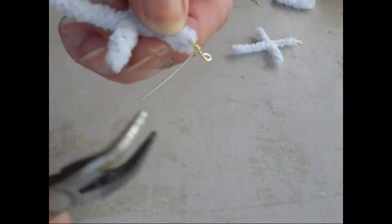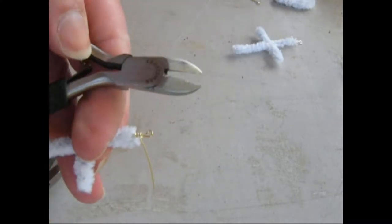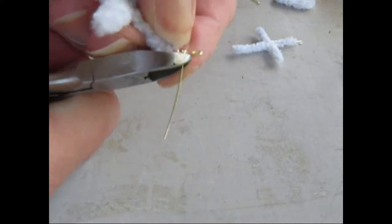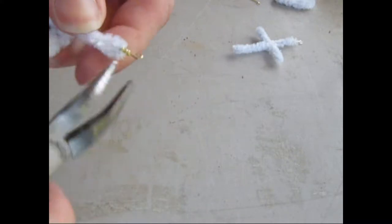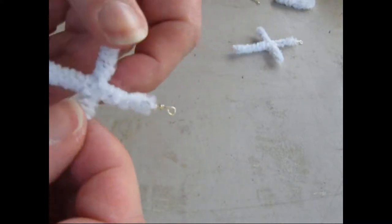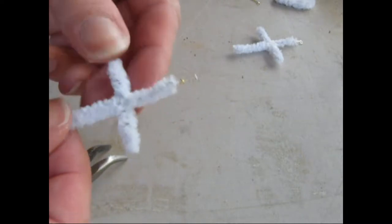After you've coiled it, you're going to want to cut off the excess. And then you're going to want to bend over the edge that you just cut so it doesn't get caught on anything. And finish twisting up the top of the cross so it doesn't flop around. And that's the cross.